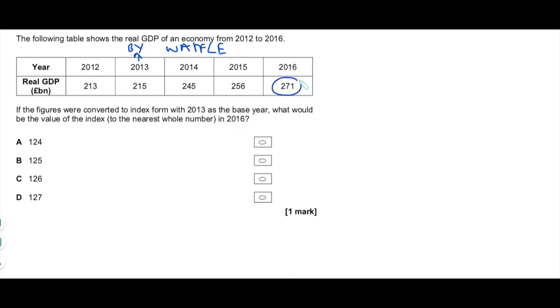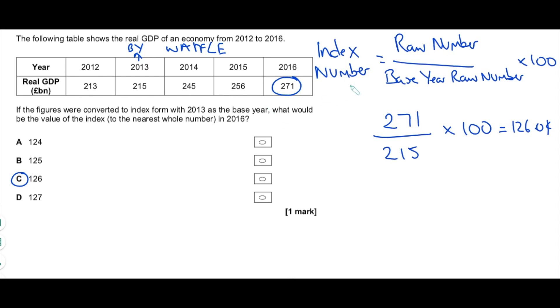So all we need to do is basically convert that number into an index number. We need the equation though. Such a beautiful equation. How do you convert a raw number to an index number? Well, you take the raw number, the raw number that you're looking to convert and you divide it by the base year raw number, and then you multiply by a hundred. So in this case, the raw number we want to convert is 271. What's the raw number in the base year? The base year is 2013. The raw number there is 215. And then you multiply that by a hundred and that will give you 126.04, which means that the answer to the nearest whole number is going to be 126. Easy. You see how important that equation is? Man, so important.